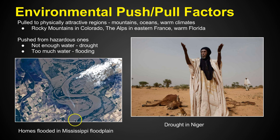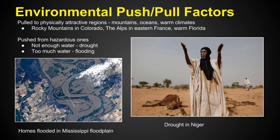Looking at flooding, we have this example in Mississippi where houses were built along a floodplain. One consideration from our text is the 100-year floodplain — an area that typically gets built up and people don't even realize it. They buy houses there not knowing they're living within a 100-year floodplain, meaning the area floods approximately every 100 years. You can see here the Mississippi floodplain completely flooded, with houses and developments under water.